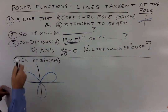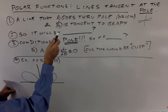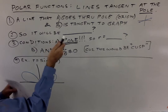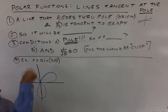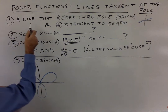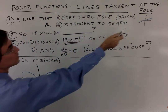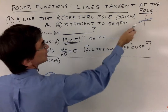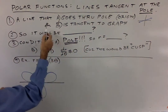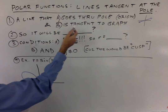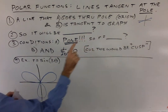This next video is about polar functions — finding lines that are tangent to the function and go through the pole. So, lines tangent at the pole. It's a line that goes through the pole, which means the origin. A line that goes through the pole and is tangent to the graph. Tangent means it touches it at one point.